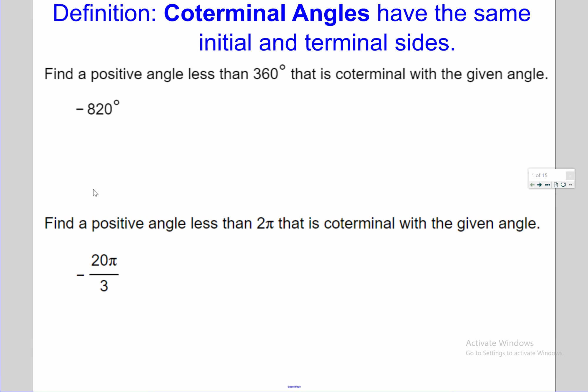Coterminal angles are angles that look the same, like 0 and 360 degrees. They look the same, they're just a full rotation away from one another. Their initial sides and their terminal sides are actually in the same location. Or like 30 degrees and 390 degrees - they would be in the same location where they start and stop, but there's an extra rotation in there.